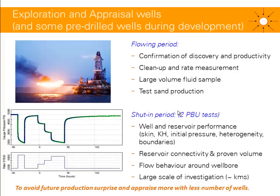During the shut-in period you get information on well and reservoir performance: skin, permeability times net thickness, initial pressure, heterogeneity in the reservoir (e.g., changes in reservoir properties, presence of boundaries), reservoir connectivity, and proven volume — for example, a minimum connected volume to your well. Importantly, there is no alternative method to calculate skin, permeability, or reservoir parameters over a large scale of investigation, and no alternative to get large-volume fluid samples or connectivity information over large volumes.